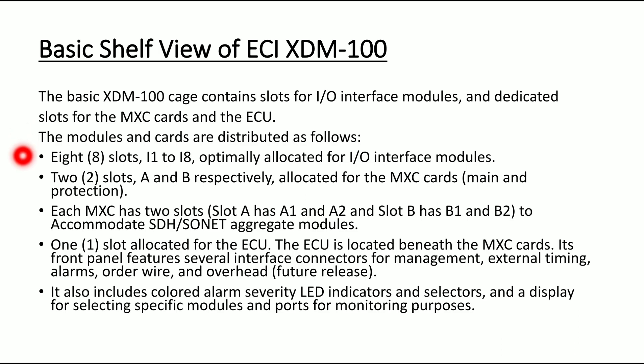8 slots, I1 to I8, are optically allotted for the input-output interface module. Two slots, A and B, are respectively allocated for the MXC card — the main cross-connect card, or multiplexer cross-connect card.